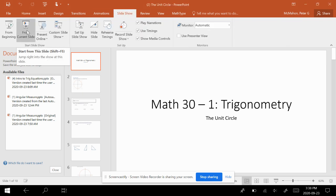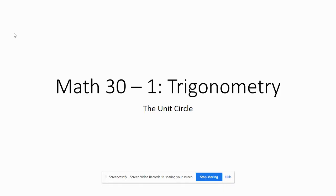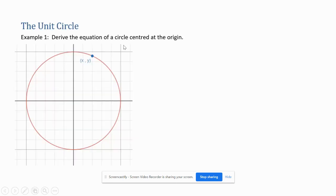All right, I'm going to continue on with my Math 30-1 trig unit. We're on topic 4.2 in the textbook, which is called the Unit Circle. Example one says: derive the equation of a circle centered at the origin.